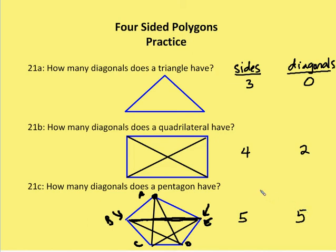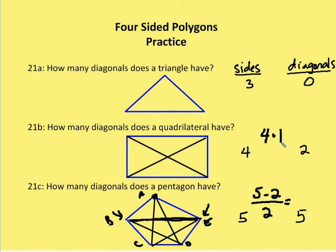So the number of diagonals equals the number of sides times the diagonals per vertex, divided by two. For the pentagon: five sides times two diagonals per vertex divided by two gives five. For the quadrilateral: four vertices times one diagonal per vertex divided by two gives two.